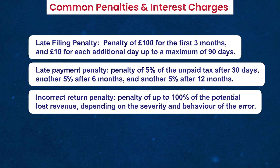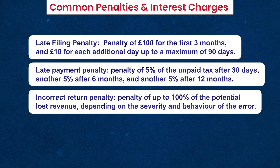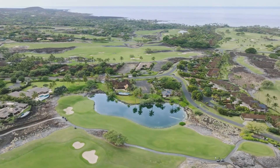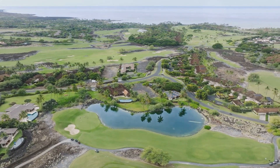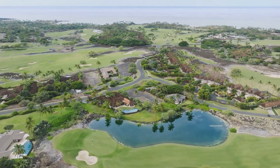Incorrect return penalty: if you file an incorrect ATED return, either by mistake or deliberately, you may be charged a penalty of up to 100% of the potential lost revenue, depending on the severity and behaviour of the error. Interest charge: if you pay your ATED late, you may be charged interest on the unpaid tax from the due date until the date of payment. To avoid these penalties and interest charges, you should file your ATED return and pay on time and accurately. If you have any doubts or difficulties, you should seek professional advice.